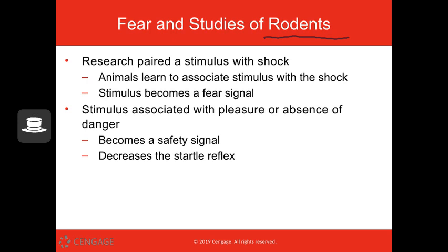We did research on rodents. You pair a stimulus with a shock, and they associate the stimulus with the shock — classic Pavlovian conditioning. The stimulus becomes a fear signal. Let's say every time you see a pencil, you get an electric shock; now every time you see a pencil it signals that danger is nearby.